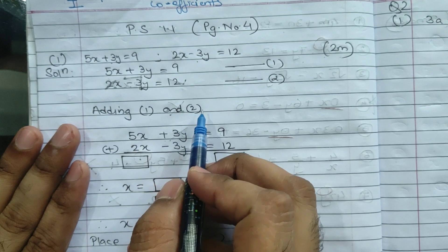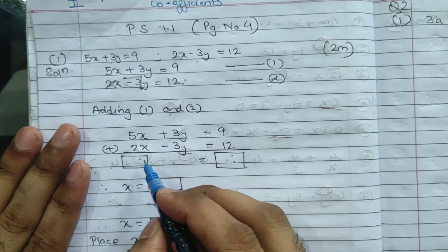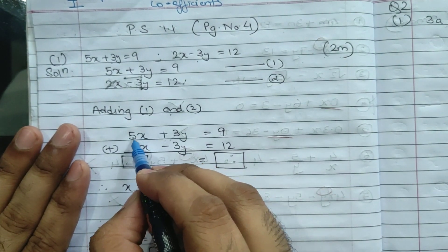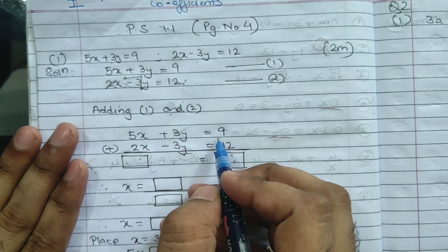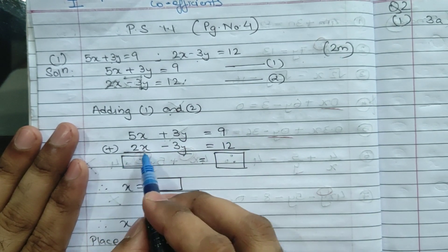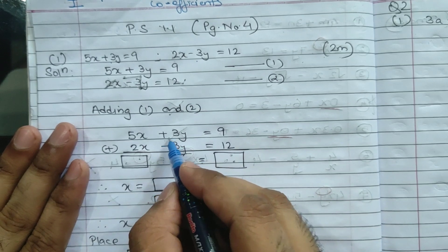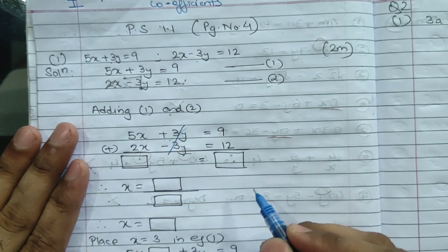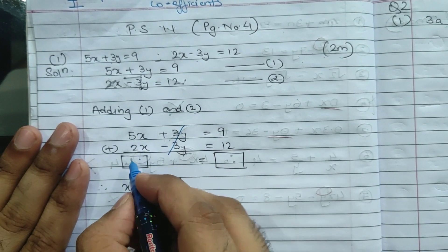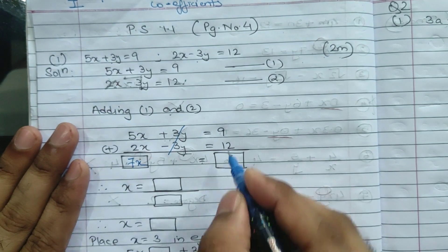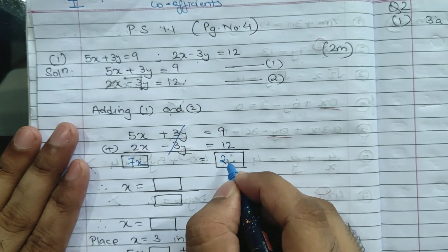So adding equations 1 and 2: 5x plus 3y equals 9 plus 2x minus 3y equals 12. Plus 3y minus 3y will get cancelled. 5x plus 2x gives me 7x. 9 plus 12 gives me 21.